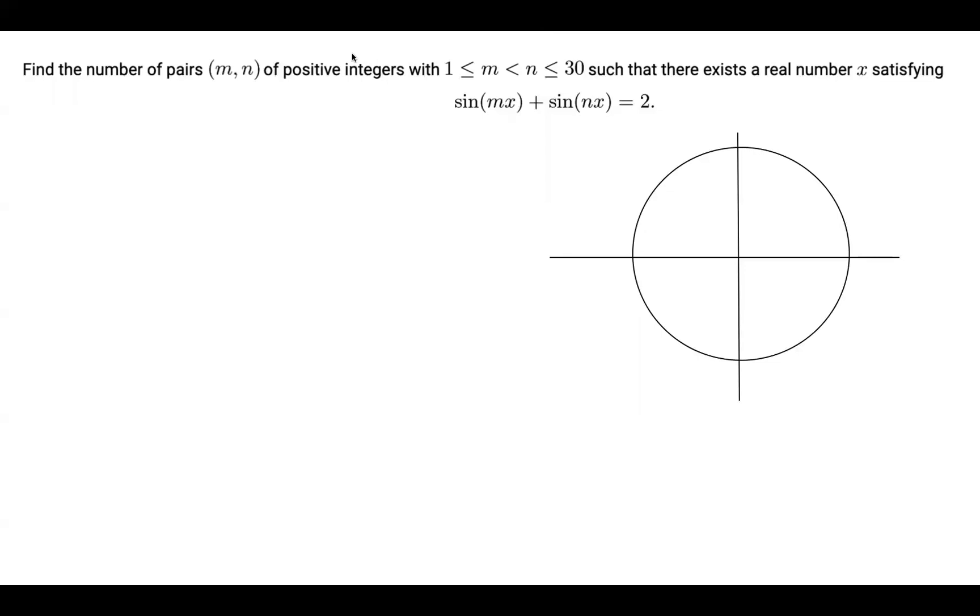So I've drawn out a unit circle over here, and what we're going to do is notice that any point on this unit circle with angle theta in radians has coordinates (cos θ, sin θ).